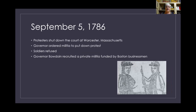On September 5th of 1786 the protesters shut down the courthouse at Worcester, Massachusetts. The governor ordered the militia — the citizen volunteer army — to go put down the protest. But when the soldiers arrived, they recognized these people: some were men they'd served with. They refused to get involved and basically walked off. So Governor Bowdoin went out and recruited a private militia of new men, funded by businessmen from Boston — essentially a private mercenary army.